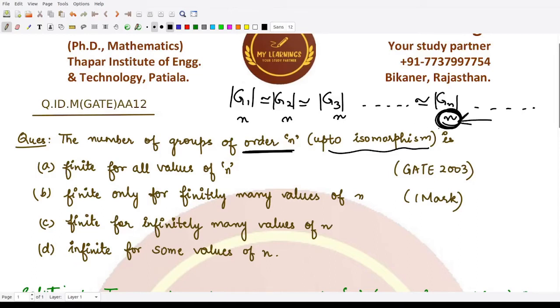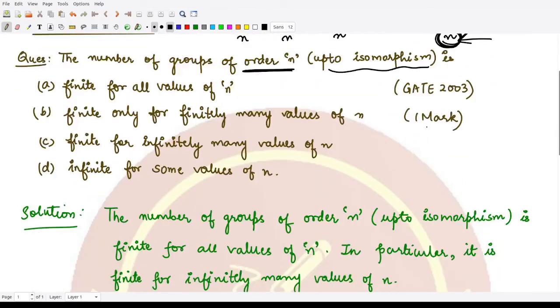It should be finite or it should be any number, right? It should be infinite. So here the answer is that the number of groups having order n up to isomorphisms is finite for all values of n.